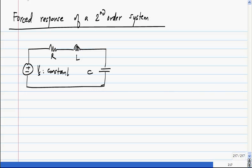Let us say Vs is a constant. What do you expect the forced response to be of Vc? Constant, and in this case Vs itself.